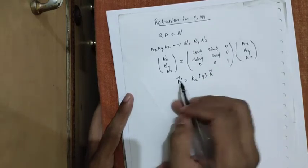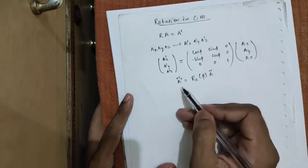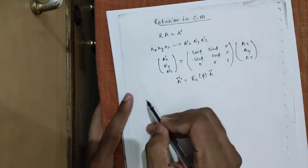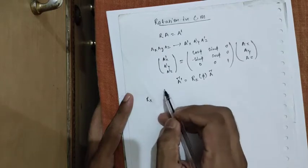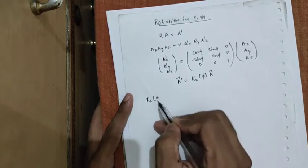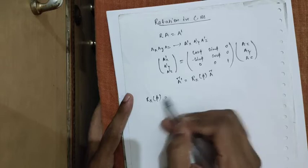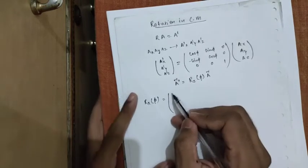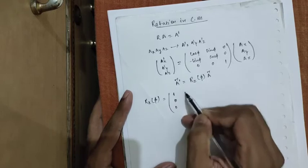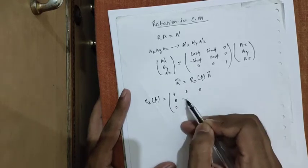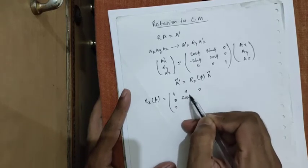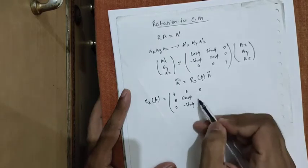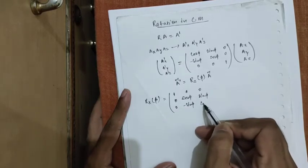Similarly, the rotation matrix for a rotation by angle phi about the x-axis is given as: [1, 0, 0; 0, cos φ, -sin φ; 0, sin φ, cos φ].